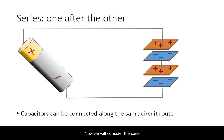Now, we will consider the case of connecting up capacitors one after the other. This is known as a series connection. In this example, we have two capacitors represented by pairs of charge plates.